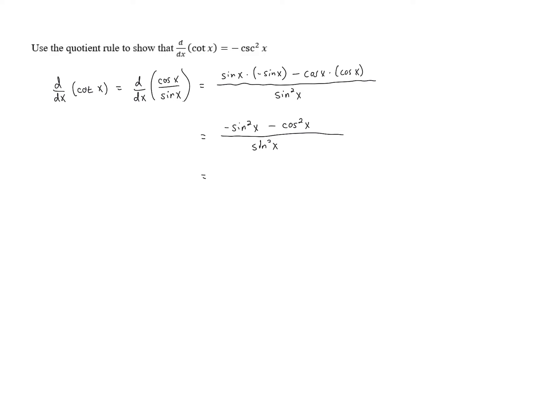Now sine squared plus cosine squared is 1. But because this is the opposite of that, we're going to end up having negative 1 over sine squared x.